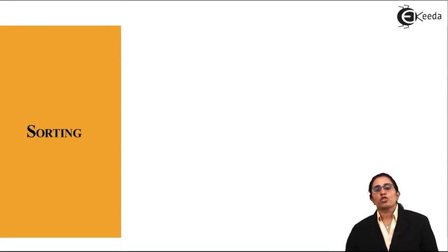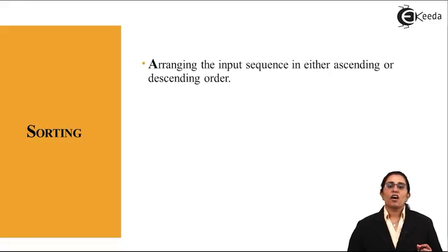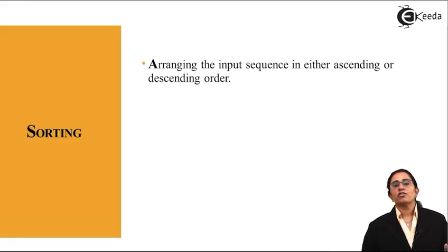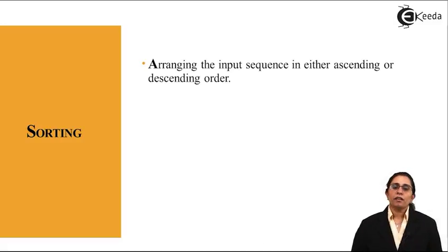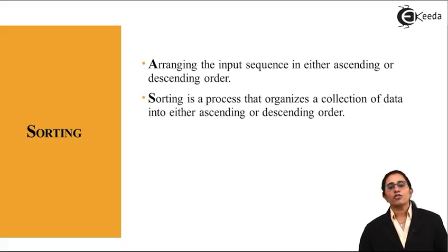What is sorting to start with? In simple terms, any sorting method is arranging the input sequence in either ascending or descending order, from larger to smaller value or smaller to larger value. Sorting is a process that organizes a collection of data into either ascending or descending order.